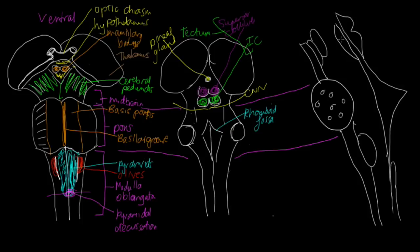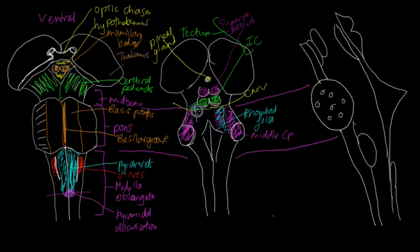We've got cerebellar peduncles to go through as well — three of them. The biggest is the middle cerebellar peduncle, which links the pons to the cerebellum. The superior cerebellar peduncle basically links the midbrain to the pons. And then we've got the inferior cerebellar peduncle, which links the medulla to the cerebellum.